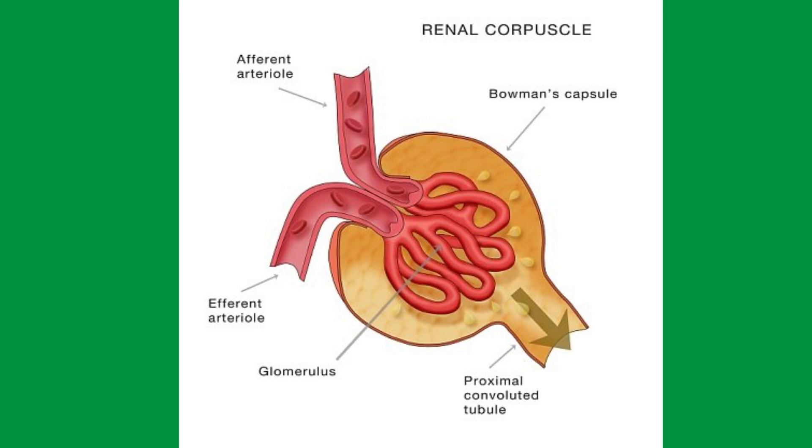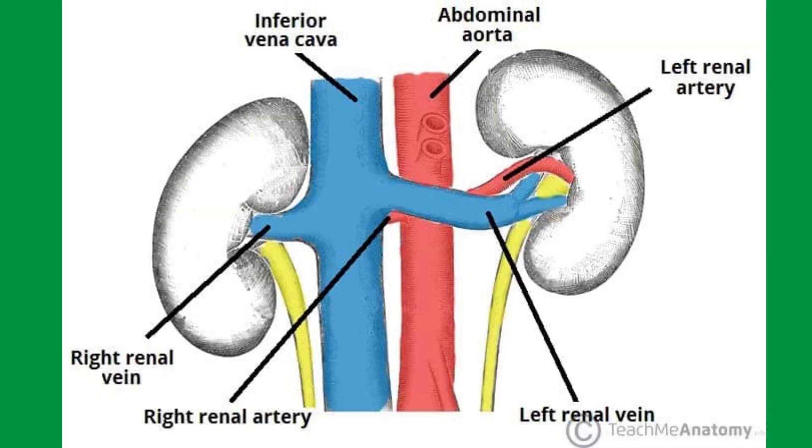Looking at the microscopic structure of the kidney: the kidney has an outer cortex and an inner medulla. The outer cortex contains the filters of the kidney called glomeruli. Blood is filtered in the glomeruli and then goes down as an ultrafiltrate into the medulla, where it is concentrated to form the final urine. This then passes into the calyces, into the pelvis of the kidney, and down through the ureter into the urinary bladder. Blood supply is via the renal arteries, returning through the renal veins.